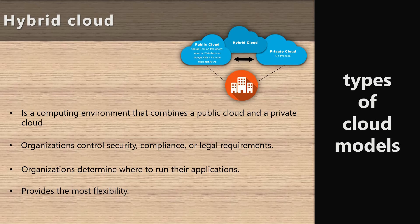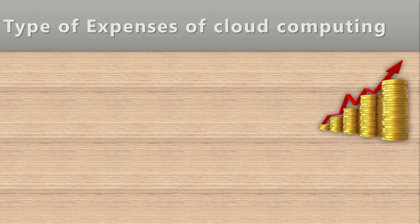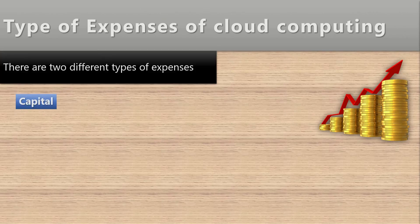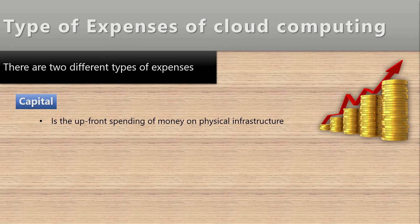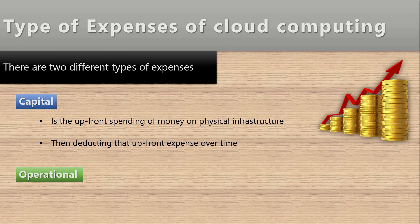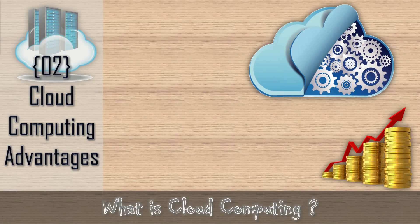Now, what about expenses? There are two types of expenses in cloud computing. The first is capital expenses, where you pay upfront for physical infrastructure and then deduct that upfront cost over time from your operational service. The second is operational expenses — pay-as-you-go — you need a service, you pay for it; you don't need it, you don't pay for it. Operational expenses are provided by the public cloud model.